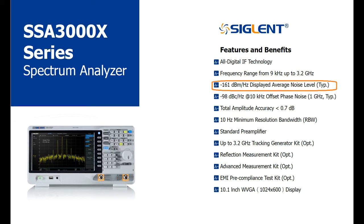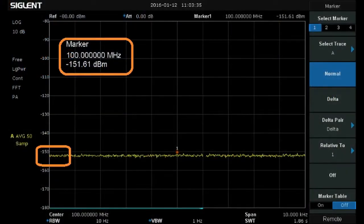The SSA 3000X has a DANL of minus 161 dBm per hertz typical. The written spec is commonly normalized to 1 Hz so the displayed noise floor of the instrument is typically near minus 151 dBm in actual use as we see here.